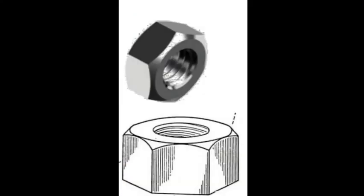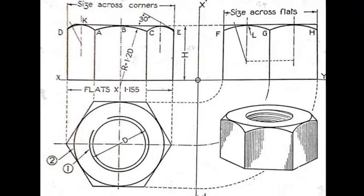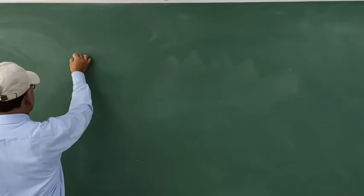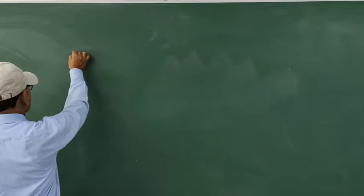Hexagonal nuts are one of the most common nuts available and are used with bolts, screws, studs and threaded rods, or any other fasteners that have machine screw threads. The figure given to you has a plan, elevation, and end view of a hexagonal nut along with all the dimensions. We will now proceed with drawing the hexagonal nut.